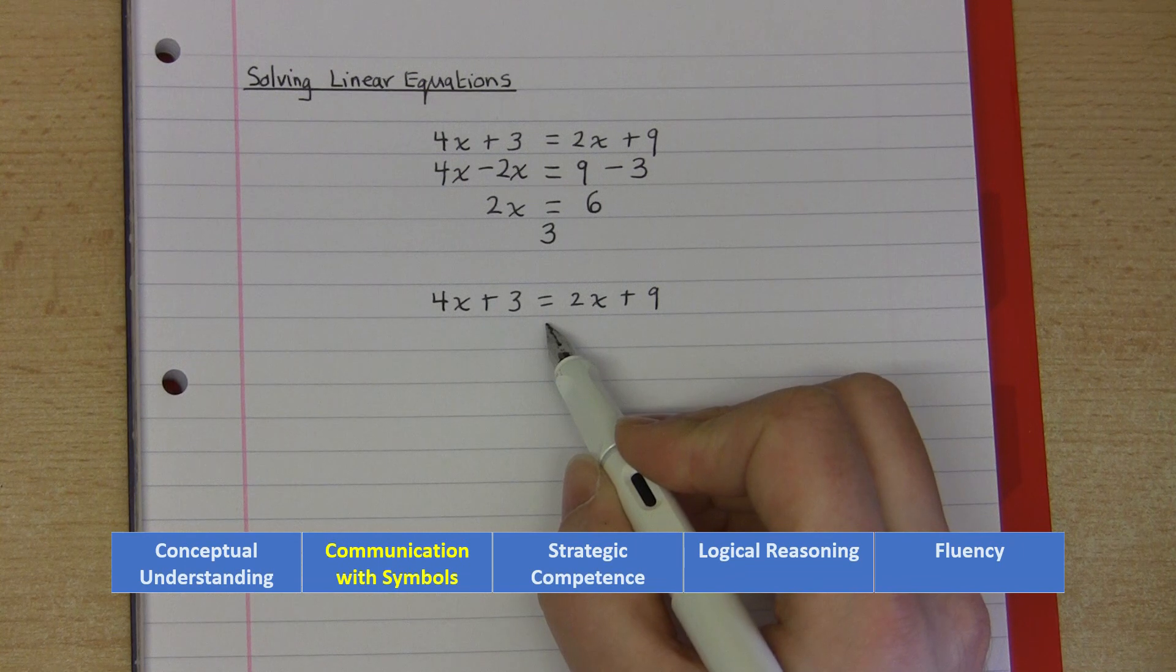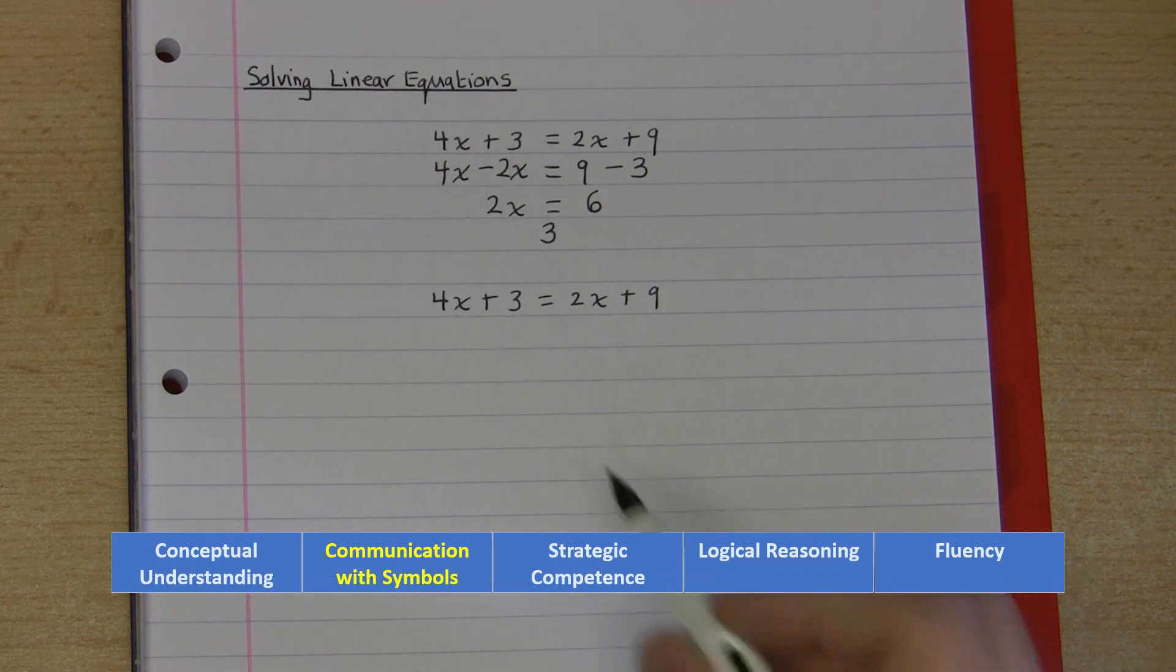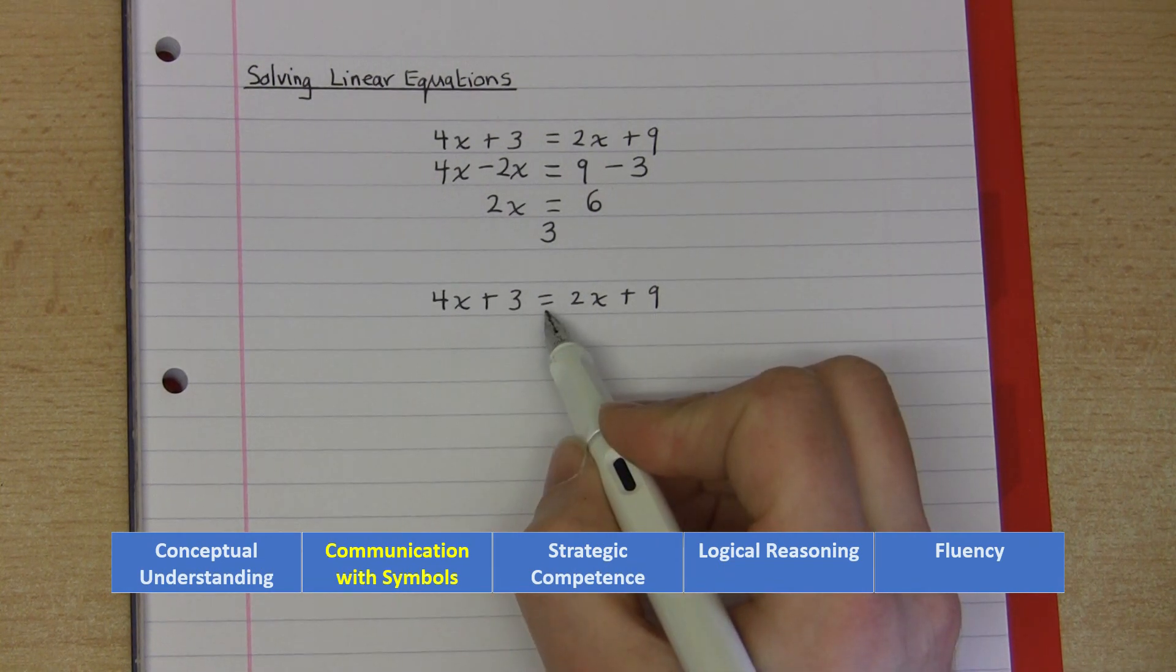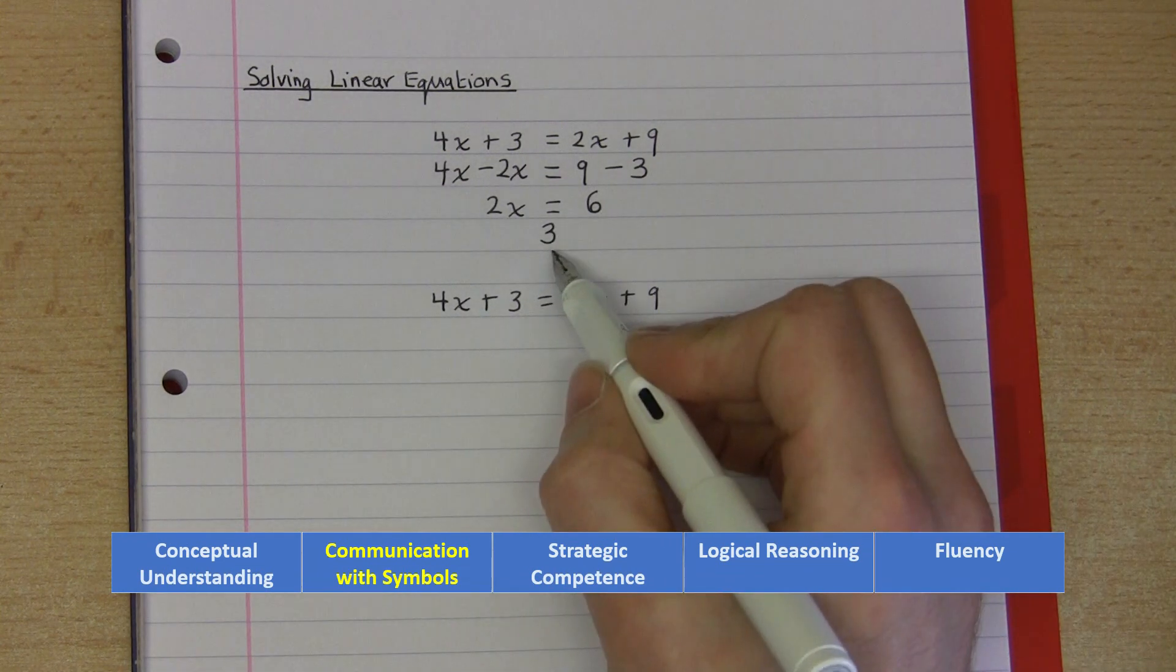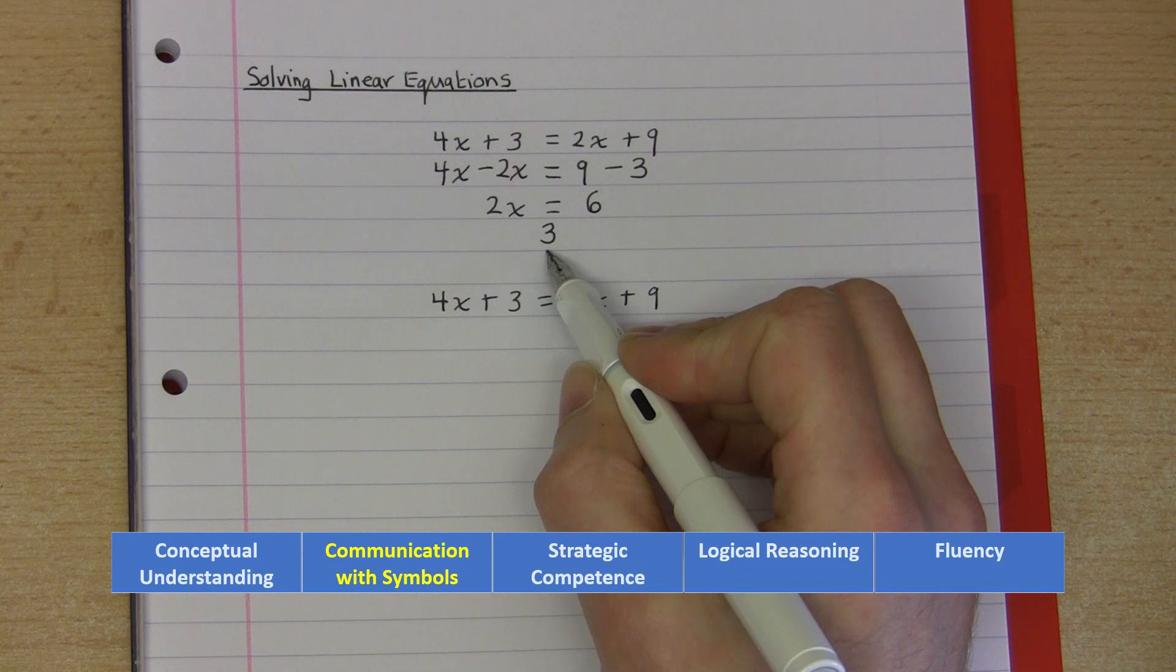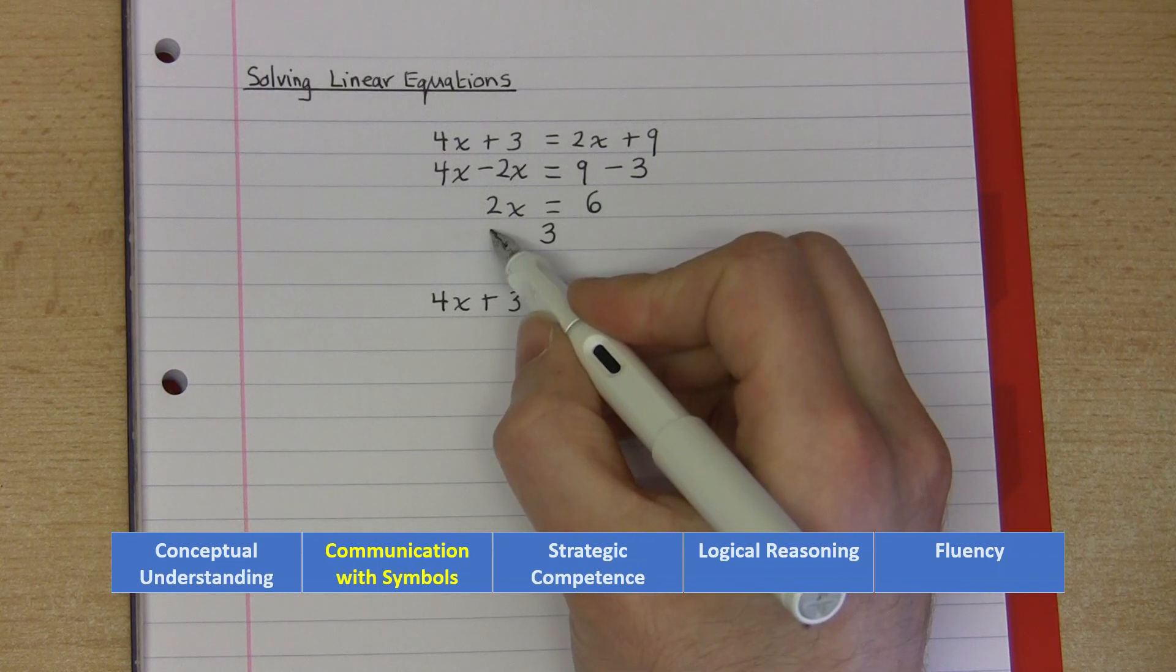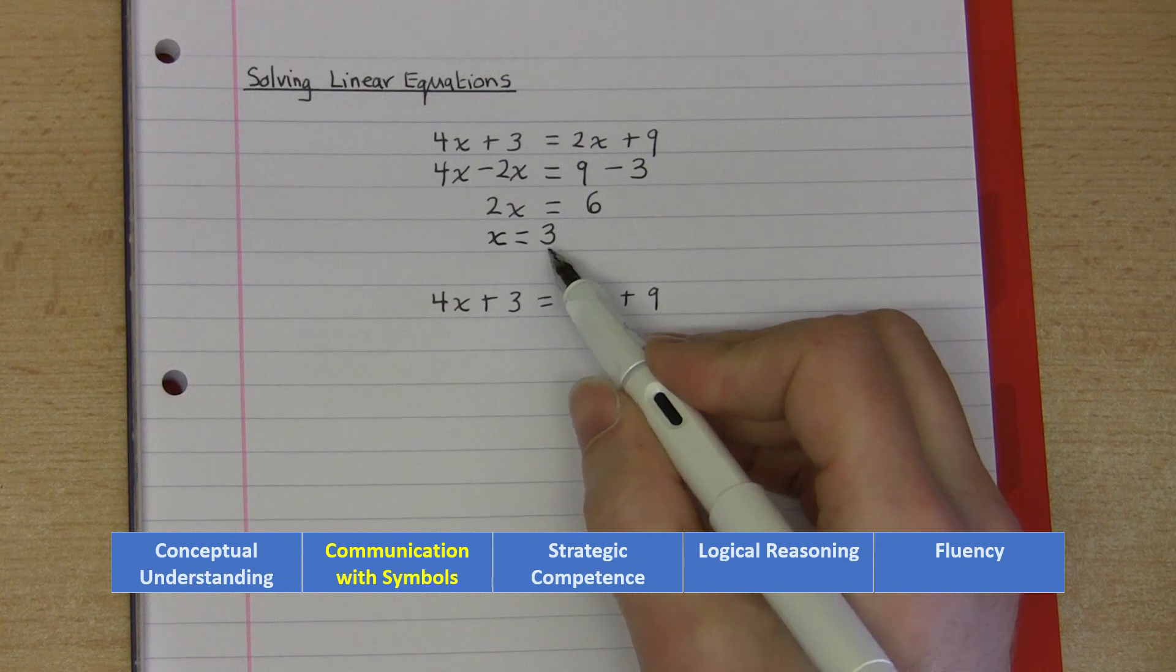And communication with symbols isn't just about the actual symbols in the equation but how we communicate with them. So above when I wrote down 3 as the solution of the equation I was incorrect in doing so, because when we are solving an equation we are finding a value of the variable. So here I should have wrote down that the variable x is equal to 3. This is the correct solution of the equation.